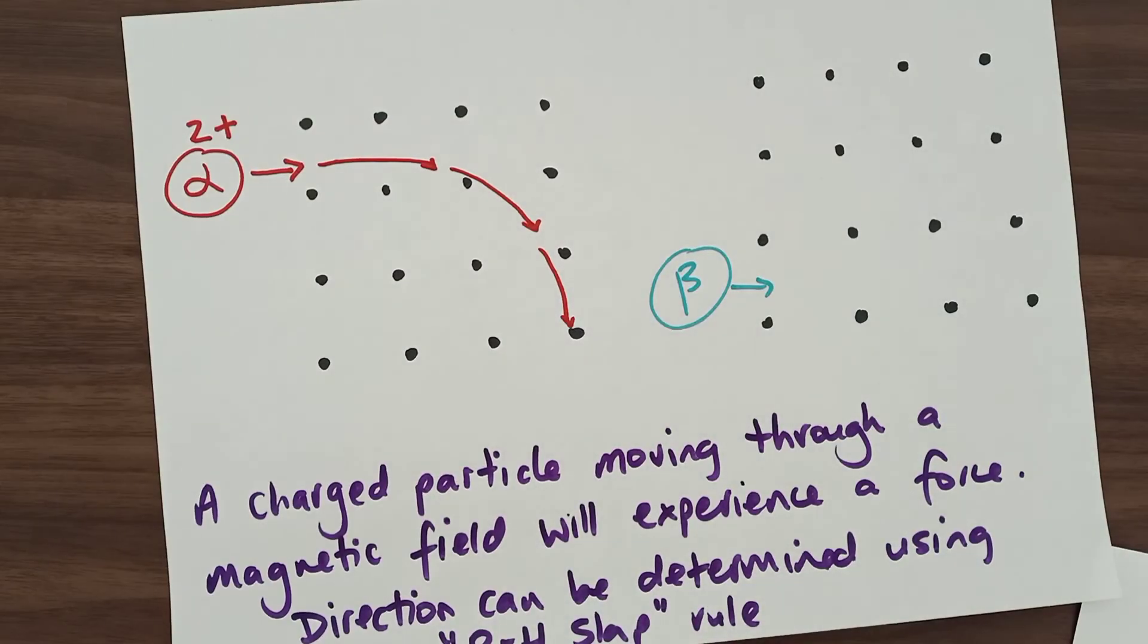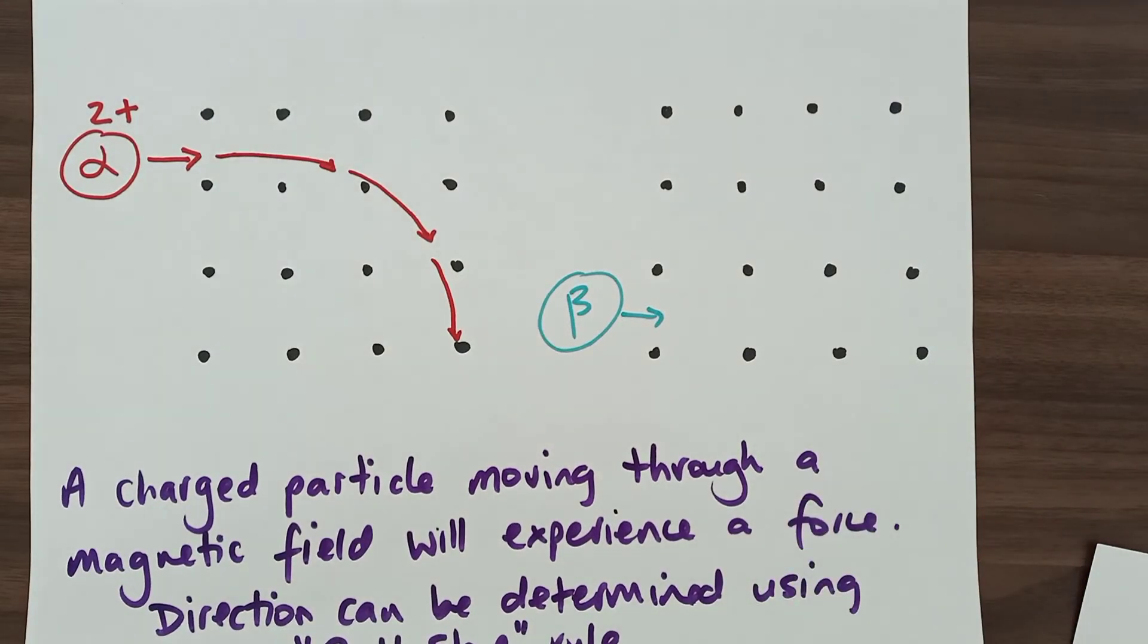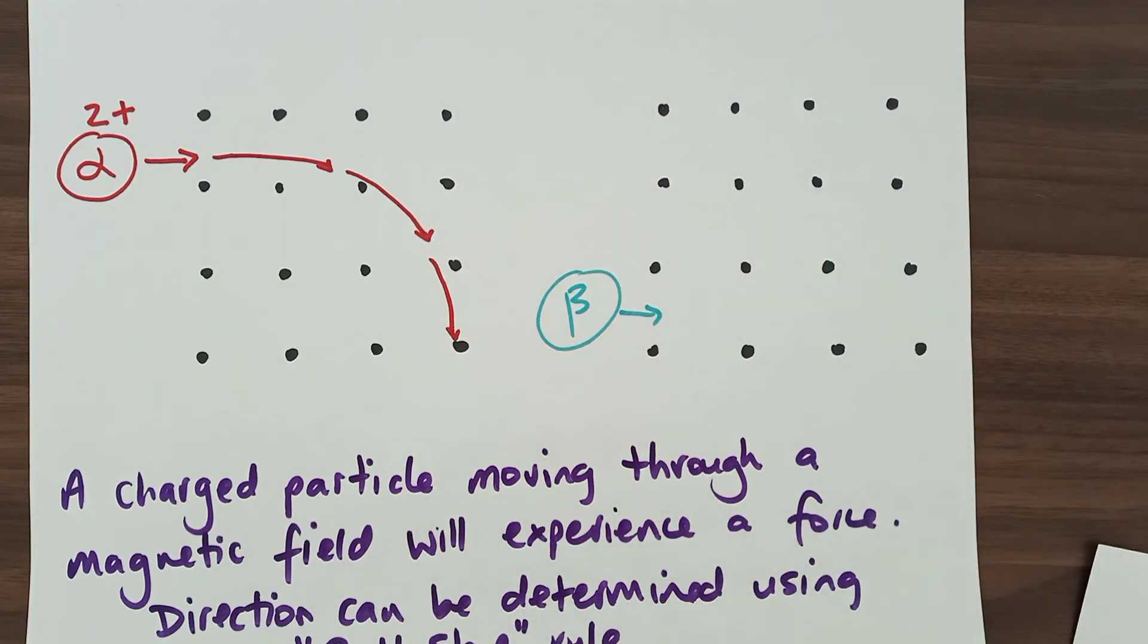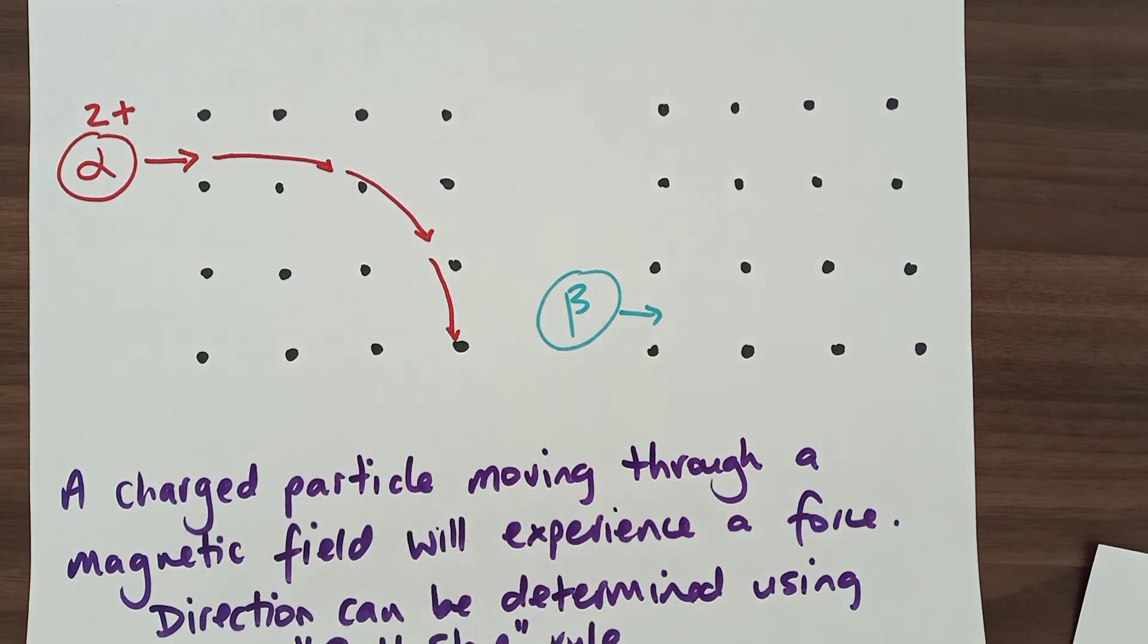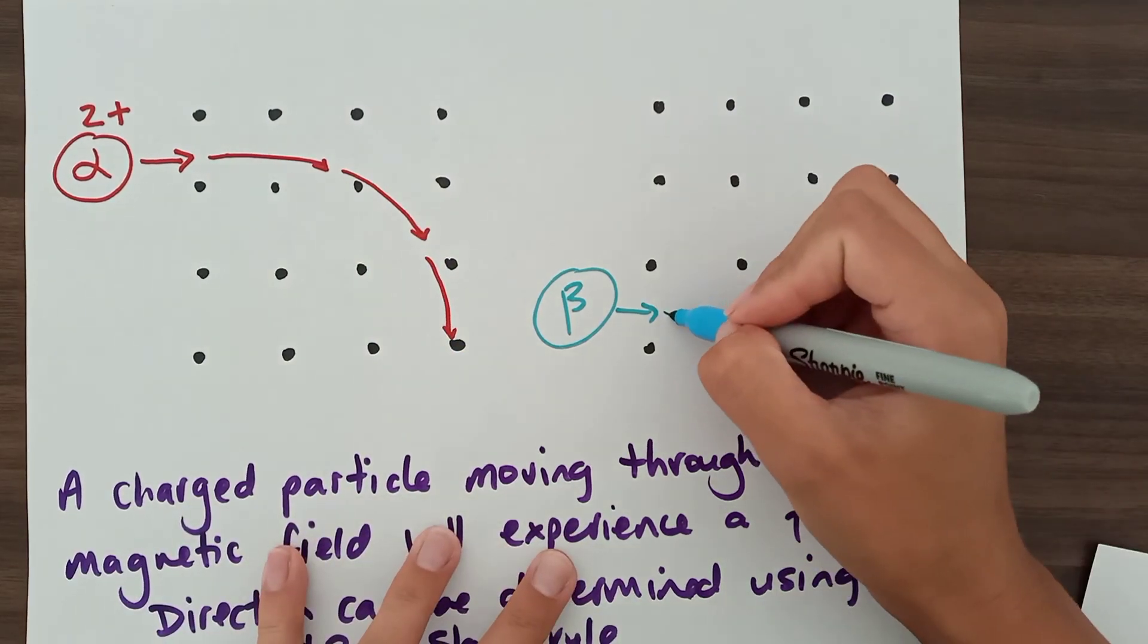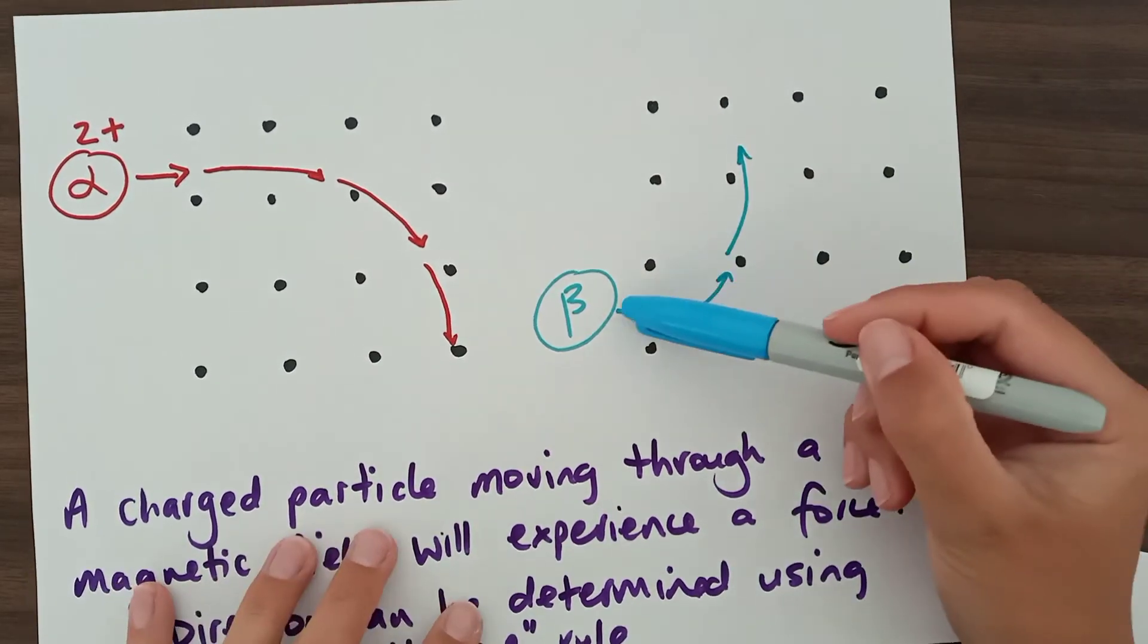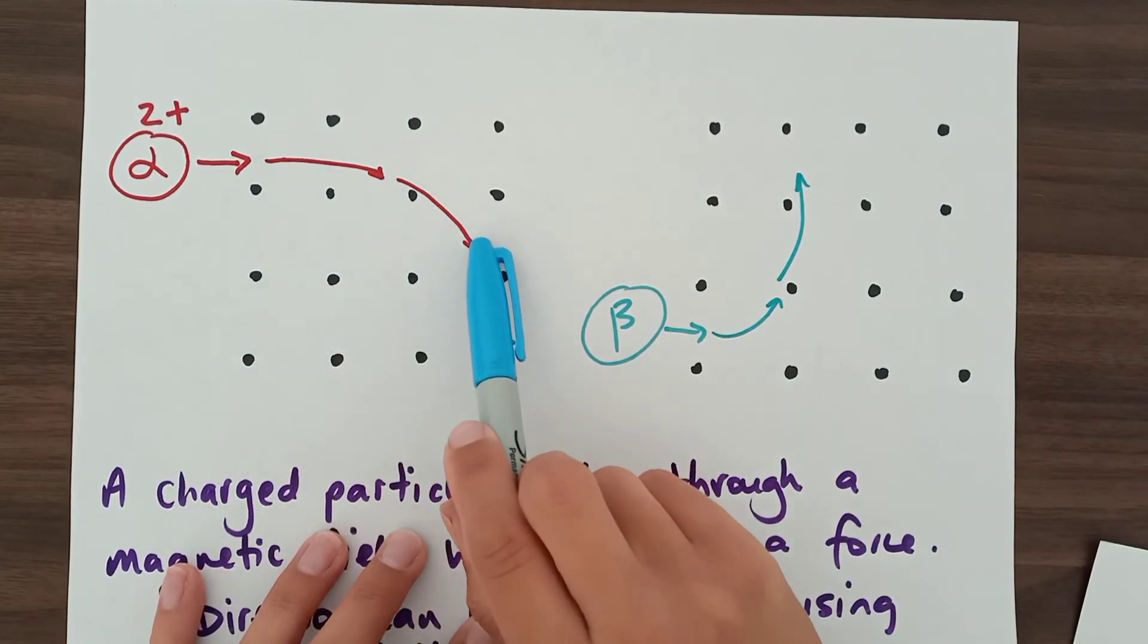Here we've got a beta particle. Now that's a negatively charged particle. So because it has the opposite charge, it's going to experience a force in the opposite direction. And this is the same magnetic field going in the same way. We already found out that a positive particle would experience a downwards force. So a beta particle is going to experience an upwards force. Now you can see I've drawn this arrow going up quite fast. Whereas this one was a bit more of a bigger curve.